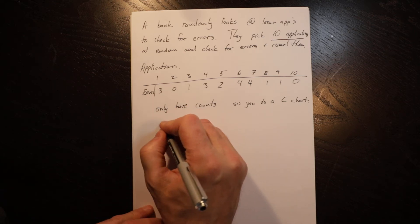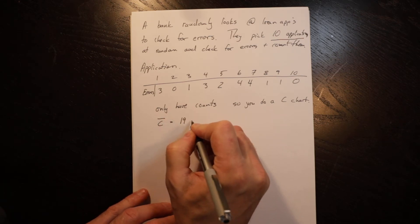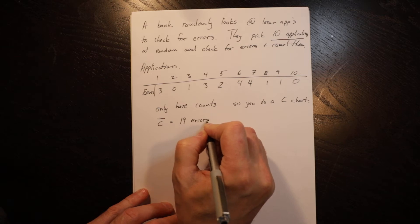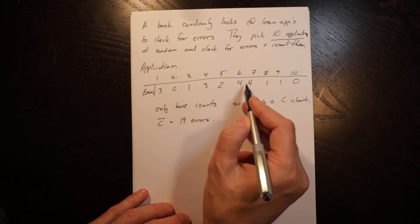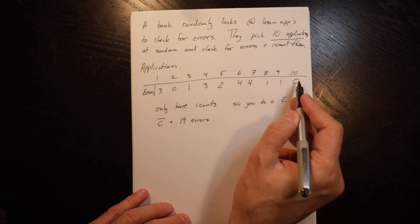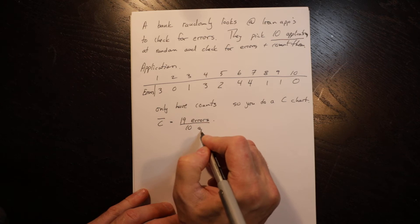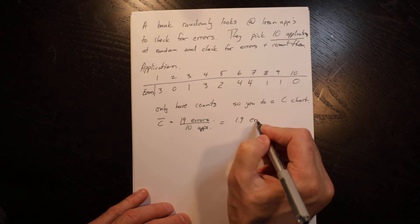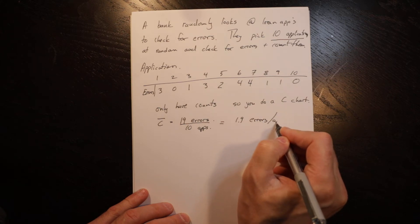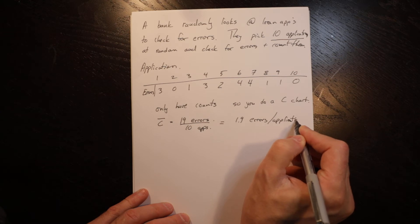So in this case we have c bar which is the average is equal to 19 errors, which is 3 plus 0 plus 1 plus 3 plus 2 plus 4 plus 4 plus 1 plus 1 plus 0, all of the errors divided by 10 applications is equal to 1.9 errors per application.